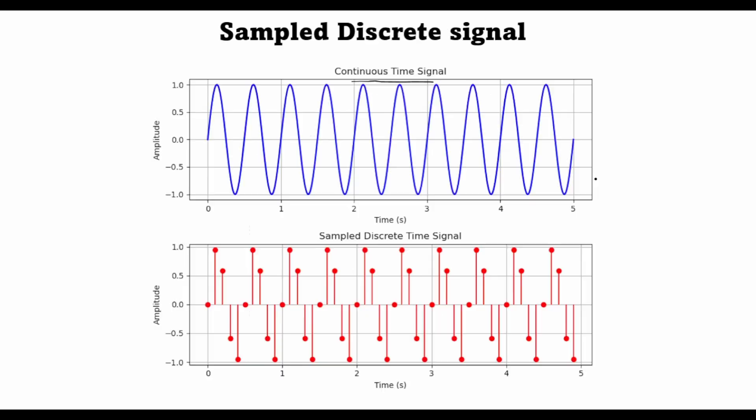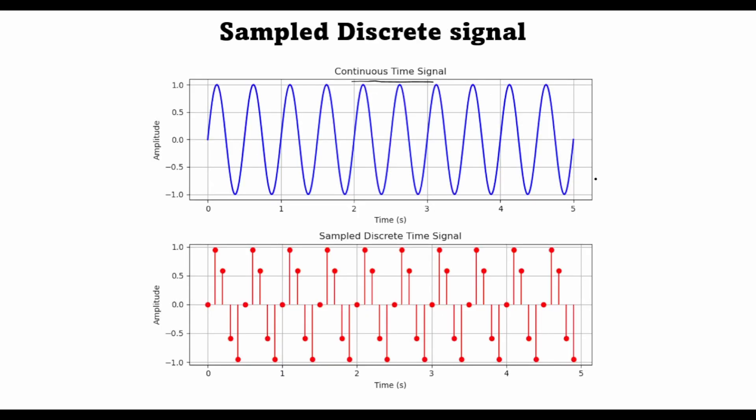However, in signals and systems, we often come across a third class where the underlying phenomena is continuous in nature. But then by sampling this signal, we convert this signal into a discrete time signal. Most of the naturally occurring phenomena is continuous in time. For example, the flow of a river is continuous. My heartbeat signal is continuous in time.